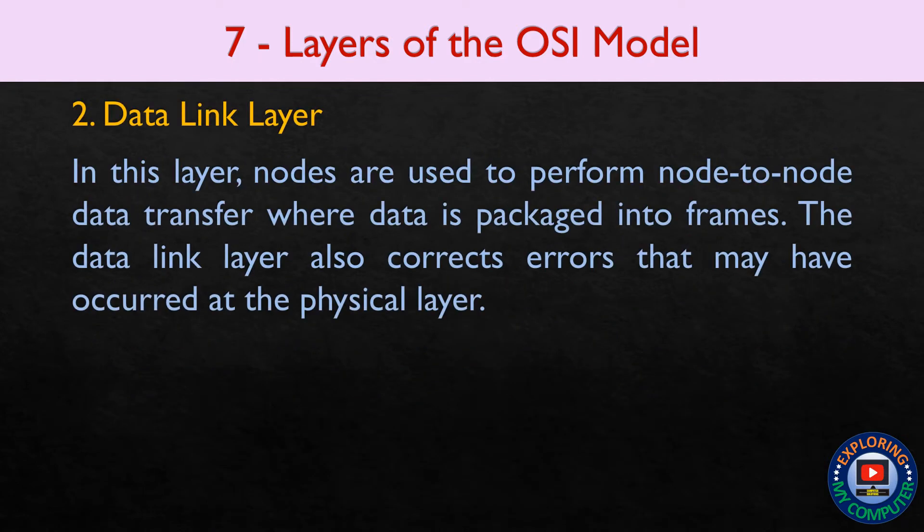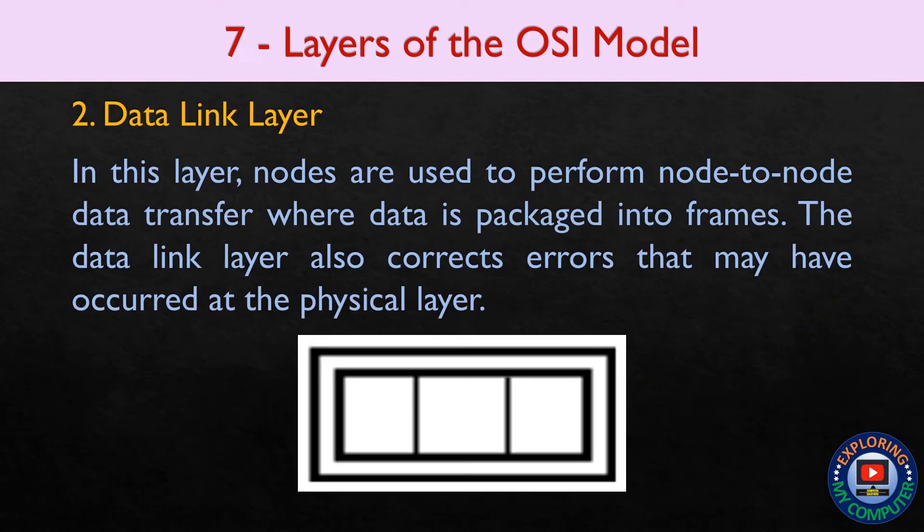In the Data Link Layer, nodes are used to perform node-to-node data transfer where data is packaged into frames. The data link layer also corrects errors that may have occurred at the physical layer.